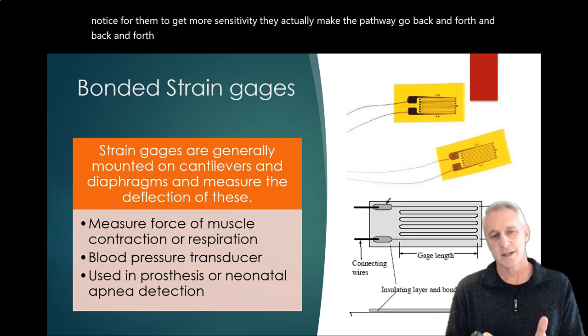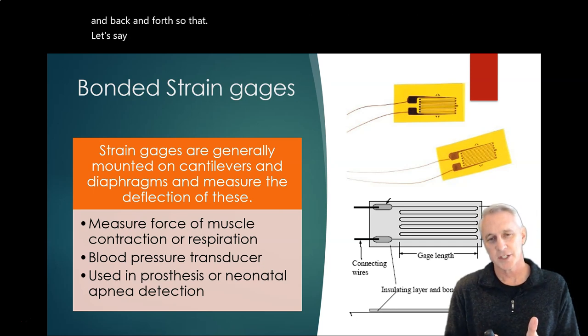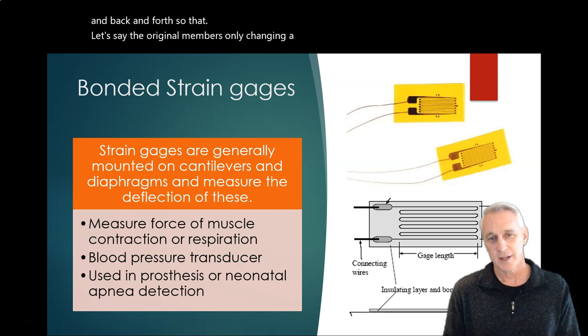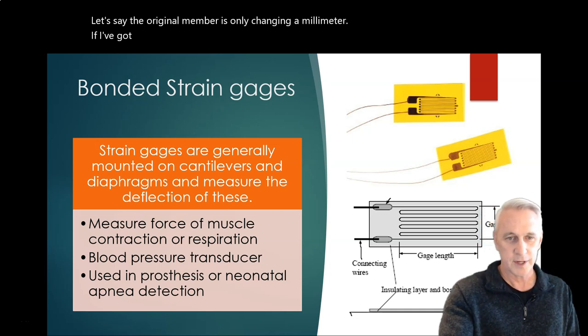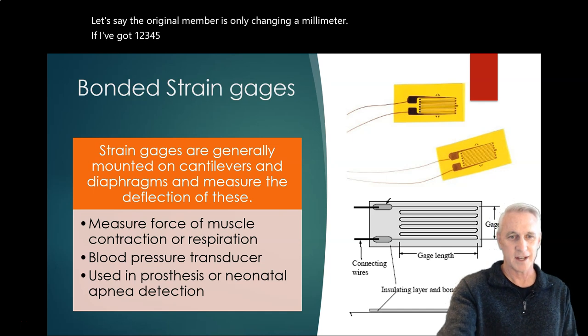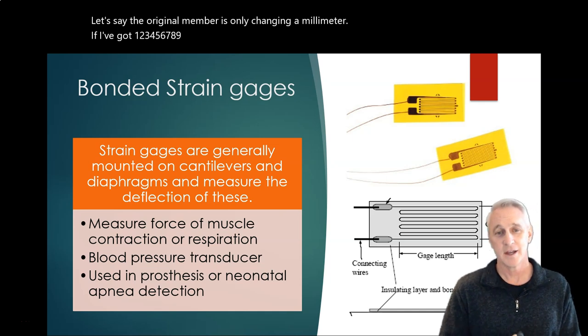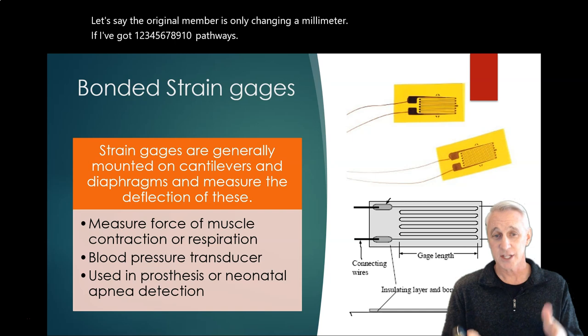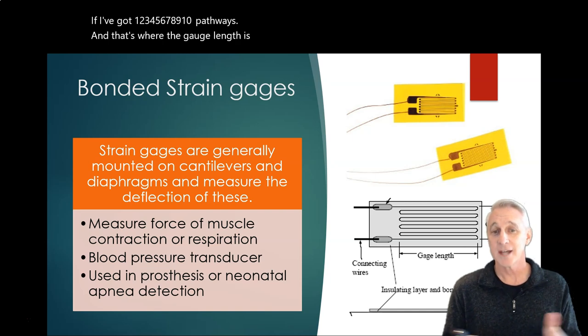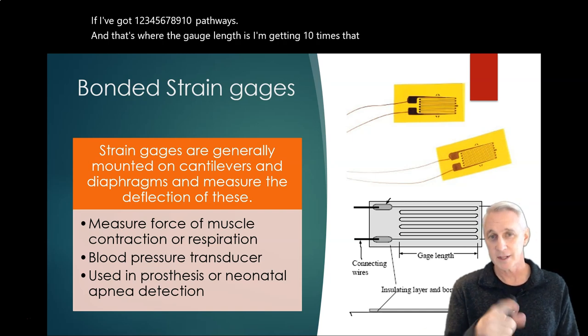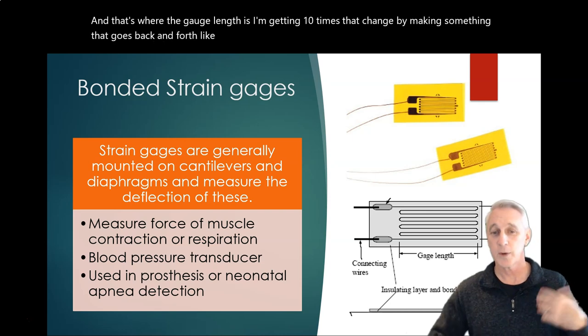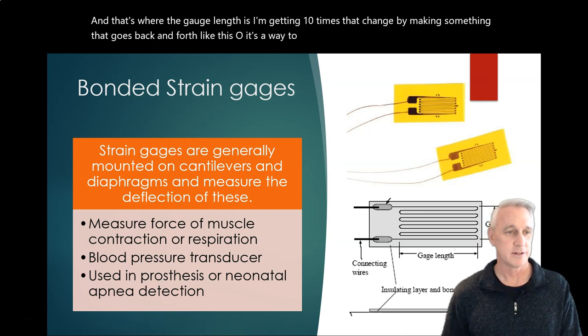And if you notice, to get more sensitivity, they actually make the pathway go back and forth. So let's say the original member is only changing a millimeter. Well, if I've got one, two, three, four, five, six, seven, eight, nine, ten pathways, and that's where the gauge length is, I'm getting ten times that change by making something that goes back and forth like this. So it's a way to amplify that signal.